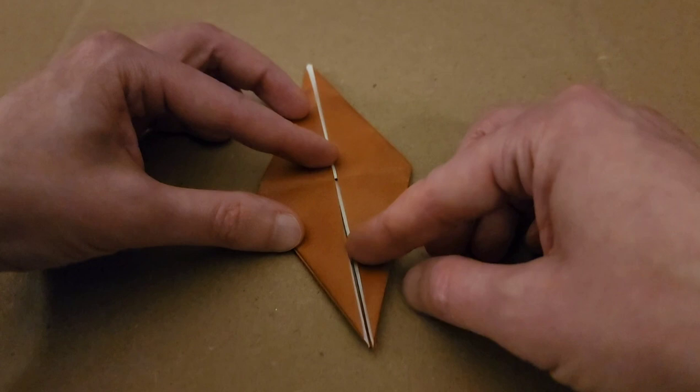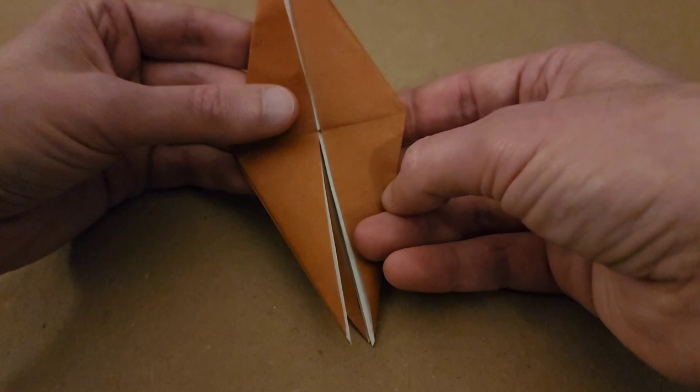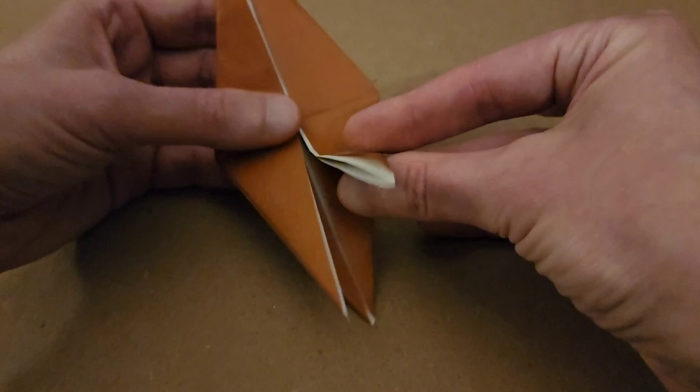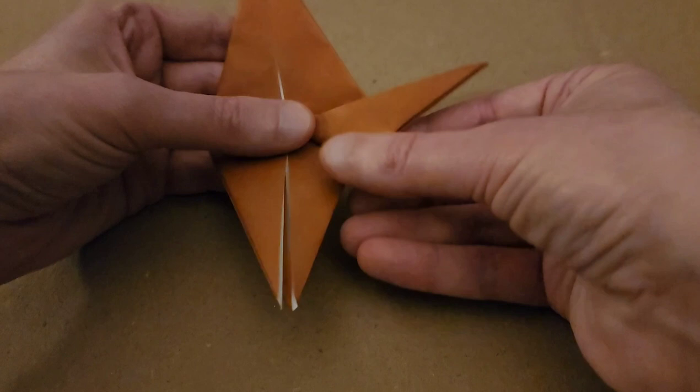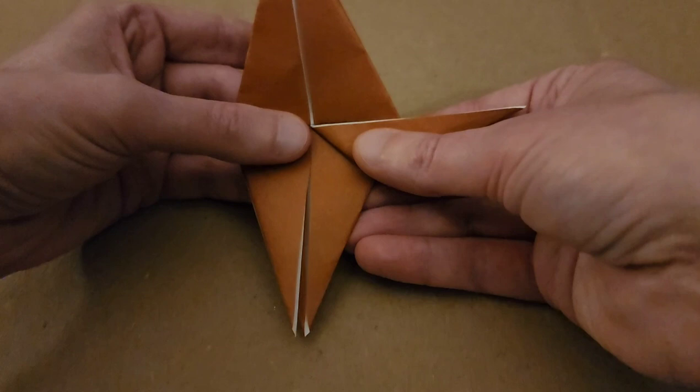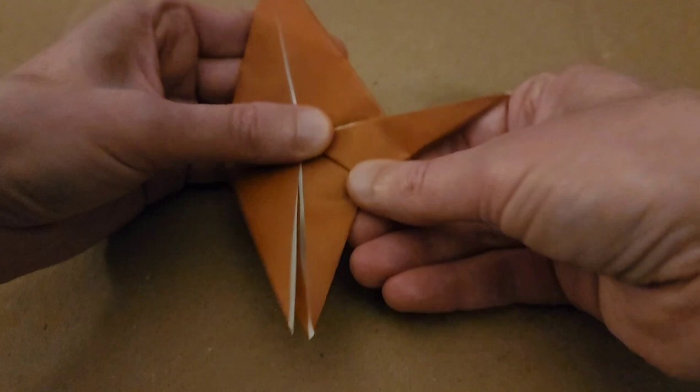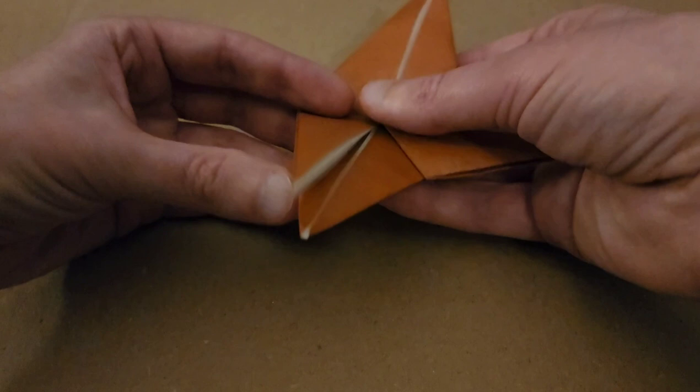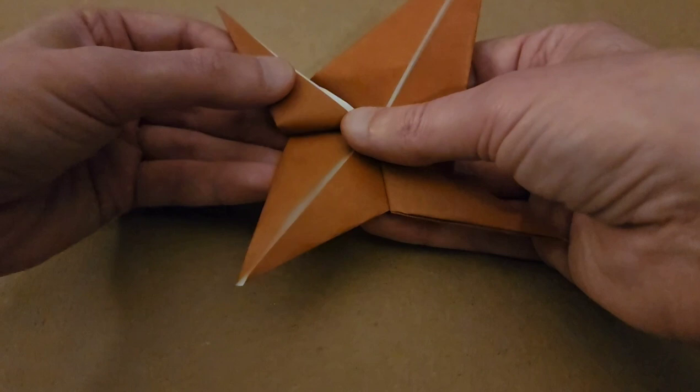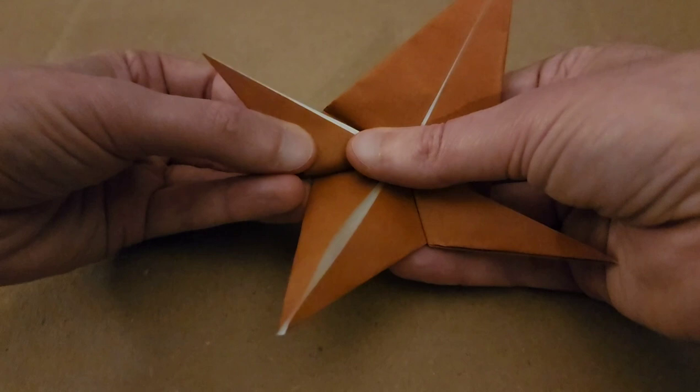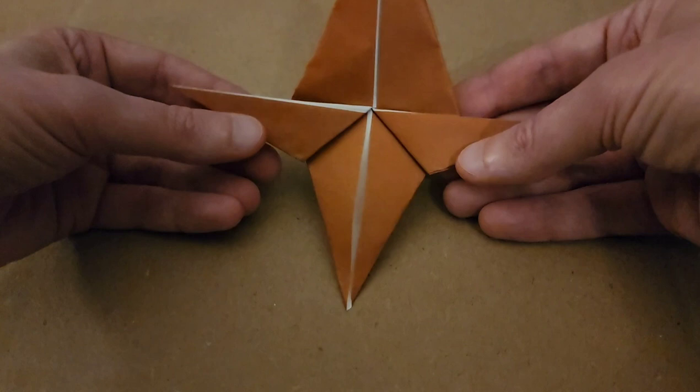So, bringing up one of the legs and folding it along this edge right here. I'm going to do that with both of them, but we'll do one at a time. So, bring one of the legs up and fold it along that crease. Like so. And then, do the other one. Bring up the leg. Fold it along that crease. And pinch. Like so.